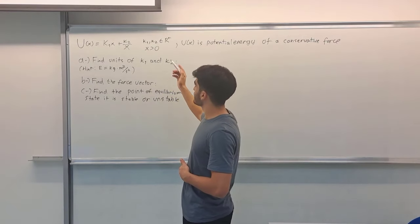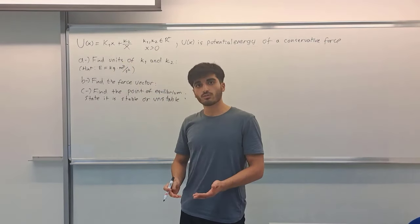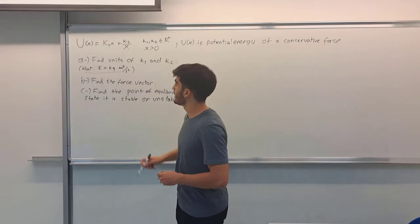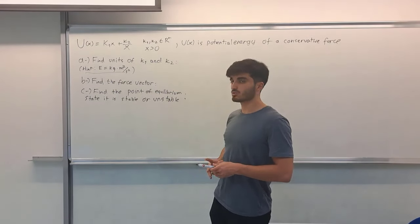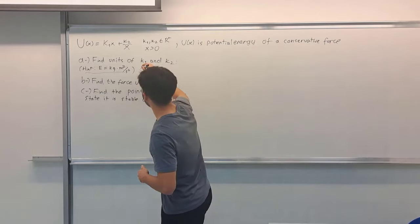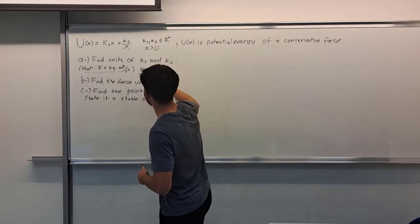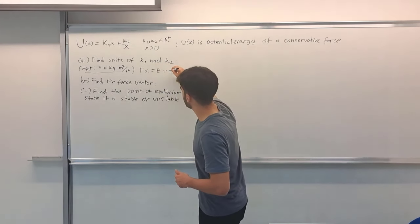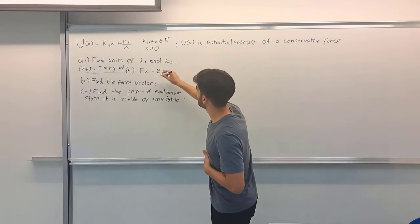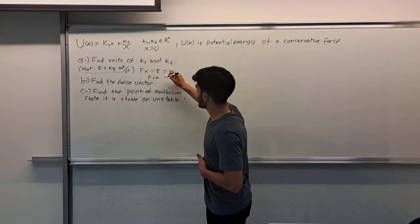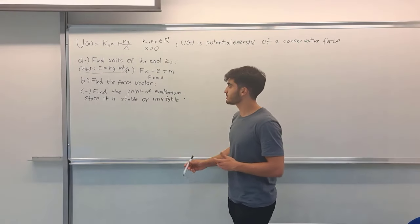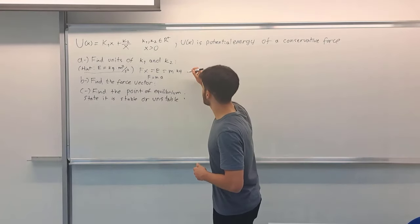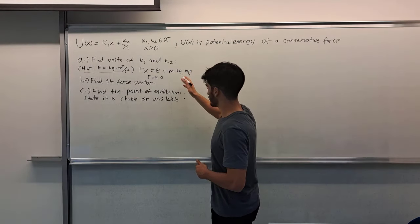Find the units of k1 and k2. Now U(x) is a potential energy function and therefore the energy units are given as a hint for us. Energy is kilogram times meter squared per second squared. We can obtain this by F times x equals the unit of energy, and the units of x is meter. The force we can write as F equals m times a, mass times acceleration. The mass unit is kilogram, and acceleration's unit is meter per second squared. So we can also reach it from there.